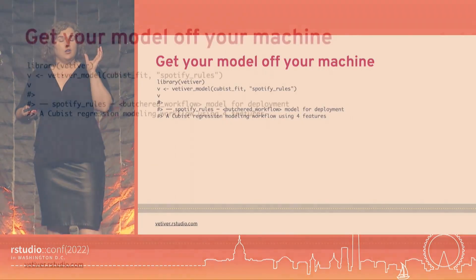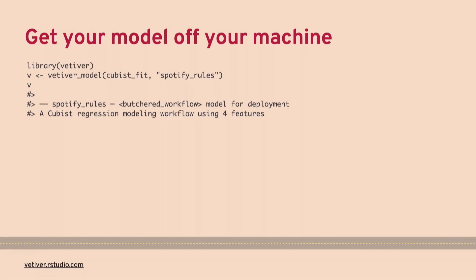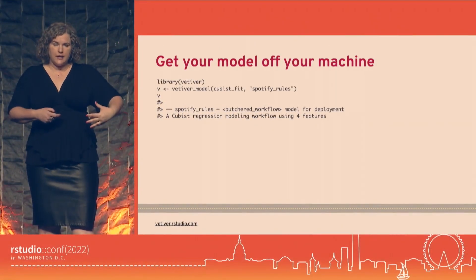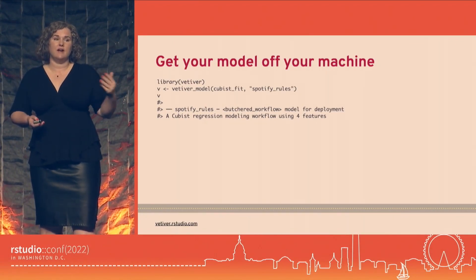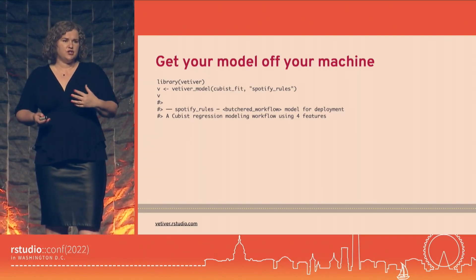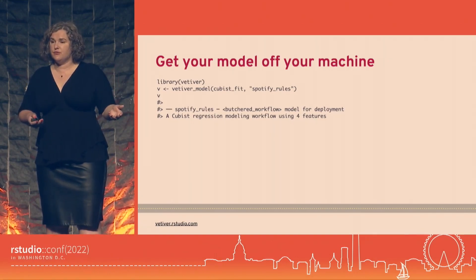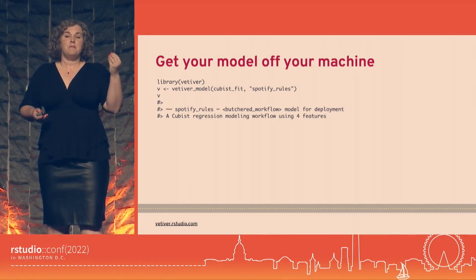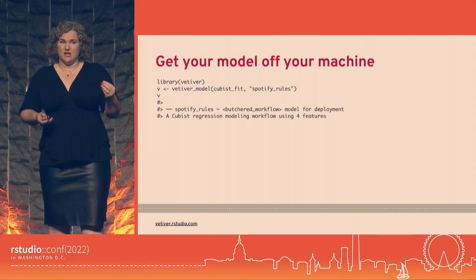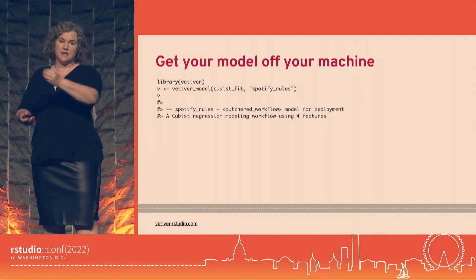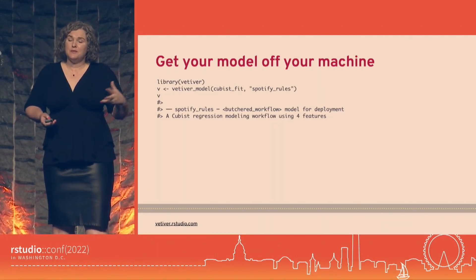Let's say I trained the model that Max talked about, and now it's time to deploy it. The first step is to create a deployable model object. This collects all the information needed to move this model from where I trained it to a new computational environment where I can make predictions — including the types, number, and names of the original predictors, and the packages and package versions needed to be installed to make predictions.